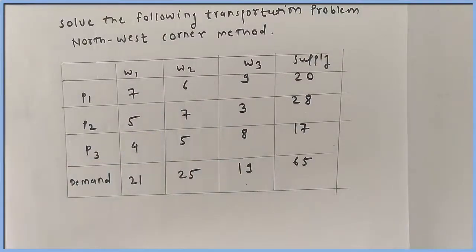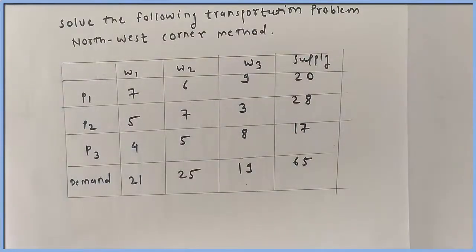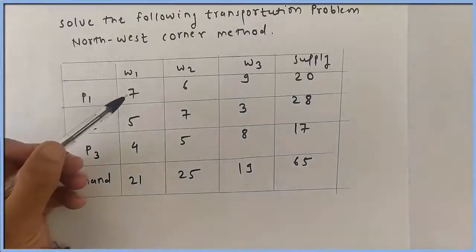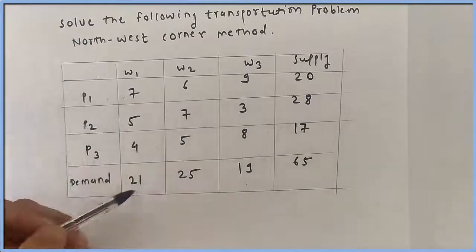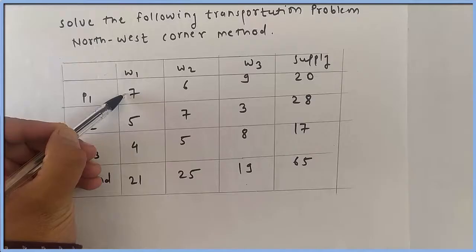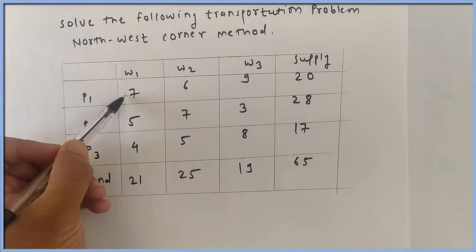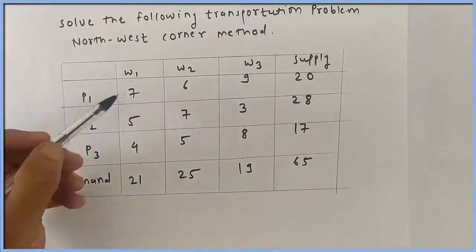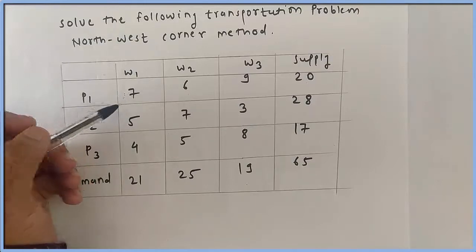Now we will solve this transportation problem with the help of the Northwest corner method. First of all we will find the Northwest corner of this table. The Northwest corner of this table is this cell. Now look at this cell — supply is 20 and demand is 21. We want to allocate some units to this cell.